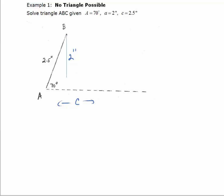One of them is that there's no triangle possible with the given values. Another scenario would be that there's only one triangle possible. And a third scenario is that there's actually two possible answers and this is why it's called the ambiguous case.